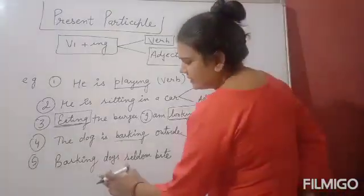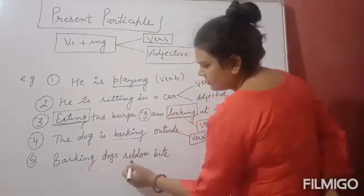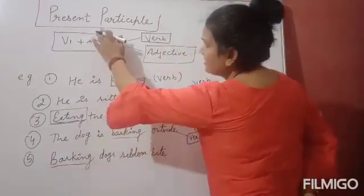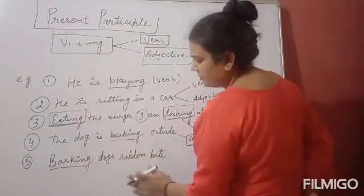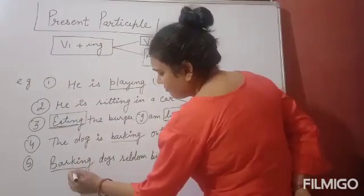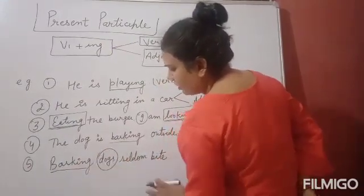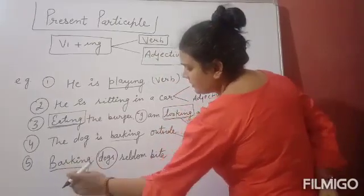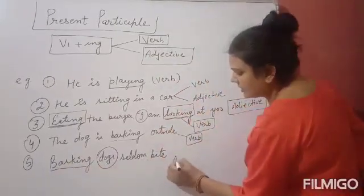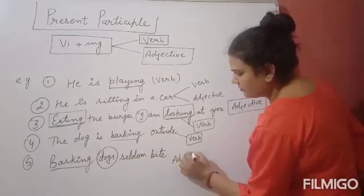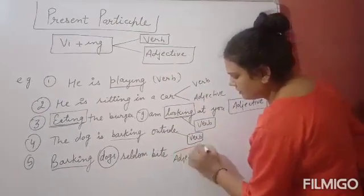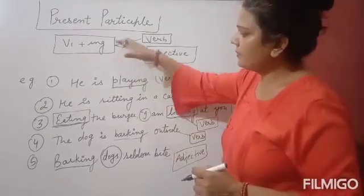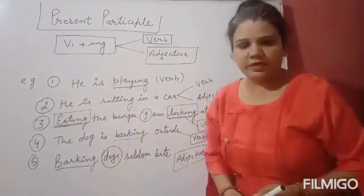In the next sentence: 'Barking dogs seldom bite.' Here, 'barking' is used as a present participle and gives extra information about the dogs. So in this sentence, the present participle is used as an adjective. In this way, you can identify present participle in a sentence. Thank you.